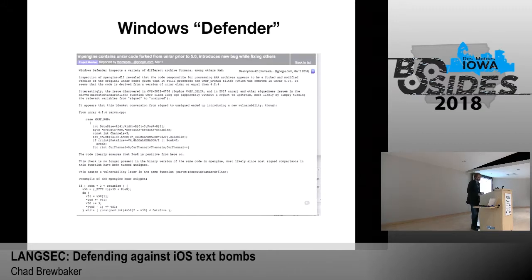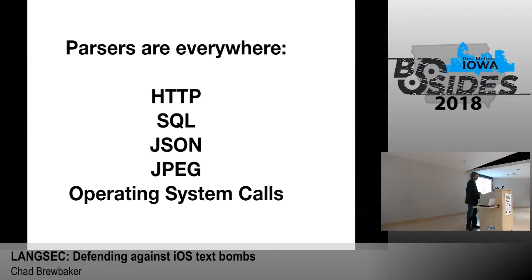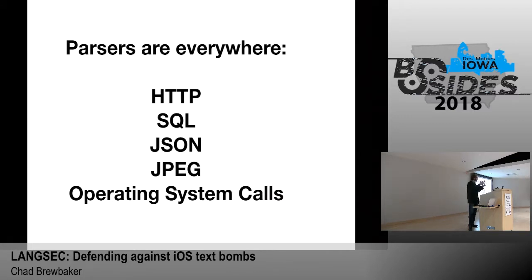Here's a vulnerability that came out a week or two ago: the Windows Defender bug, which was a bug in the Windows vulnerability scanner. It parsed a RAR file and had a memory leak with root privileges. Stuff like this should not happen if we were writing formal parsers. Think about all the different parsers you use: HTTP, command line, SQL, JSON packets, data files like PNG. You also have a parser in a lot of your operating system calls — any time you're passing a string to OS calls in your C library, there's a parser under the hood.